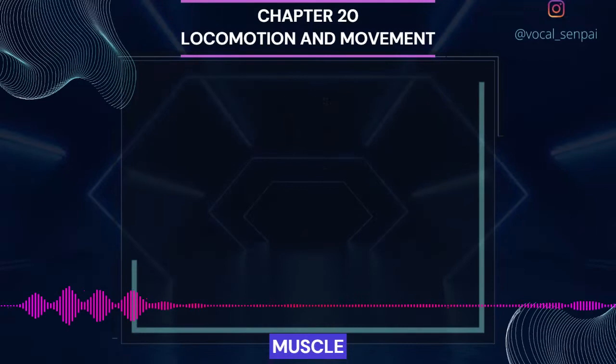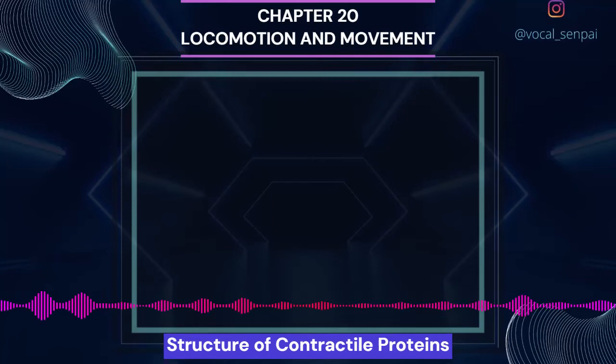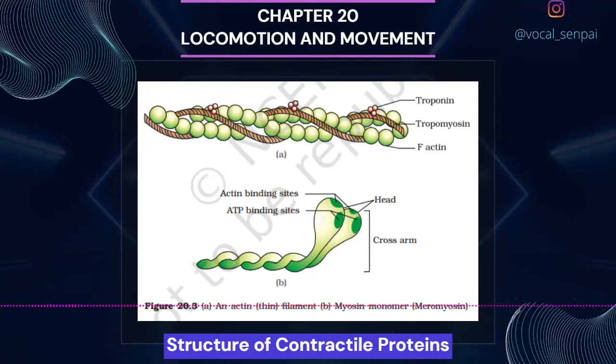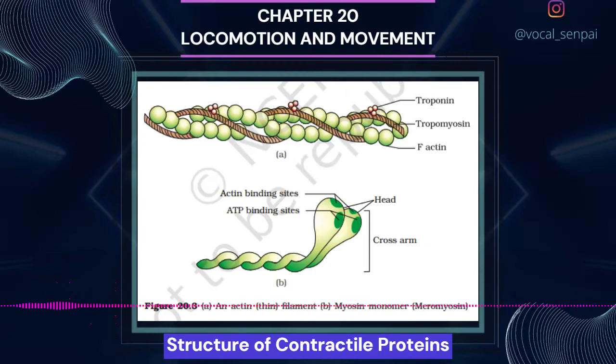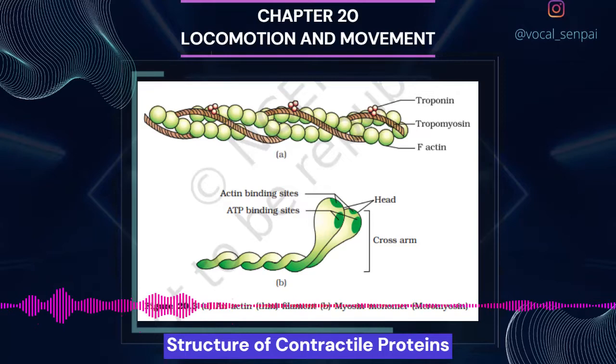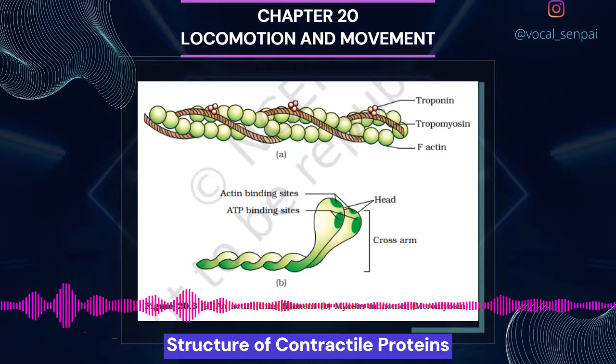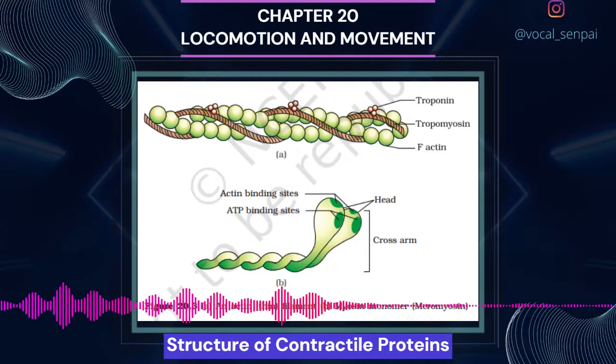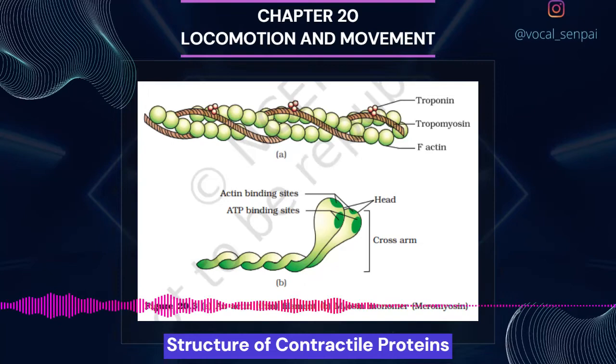Structure of contractile proteins. Each actin (thin) filament is made of two F-actin (filamentous actin) strands helically wound to each other. Each F-actin is a polymer of monomeric G (globular) actins. Two filaments of another protein, tropomyosin, also run close to the F-actins throughout their length. A complex protein, troponin, is distributed at regular intervals on the tropomyosin. In the resting state, a subunit of troponin masks the active binding sites for myosin on the actin filaments.